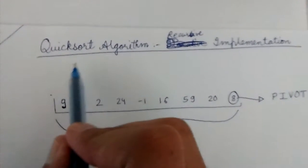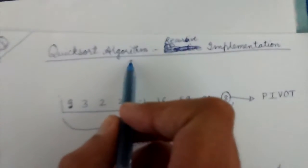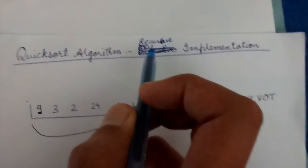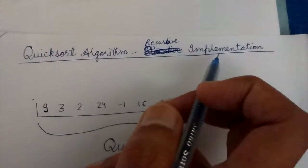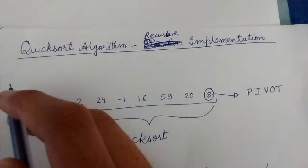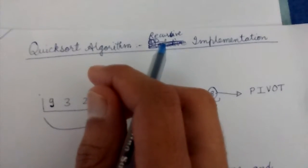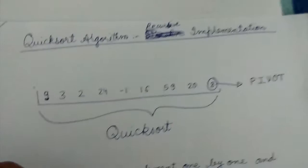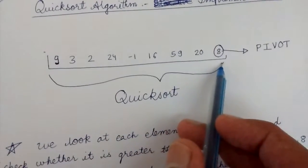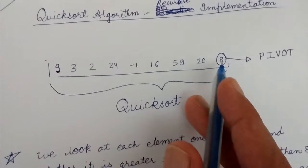Today we will look at an interesting sorting algorithm: the QuickSort algorithm. There are two implementations of the QuickSort algorithm. The first one is the recursive implementation, and the second one is the iterative implementation, which we'll discuss in our next video. In this video, we will focus on the recursive implementation. Let's assume we have an array to be sorted using QuickSort.